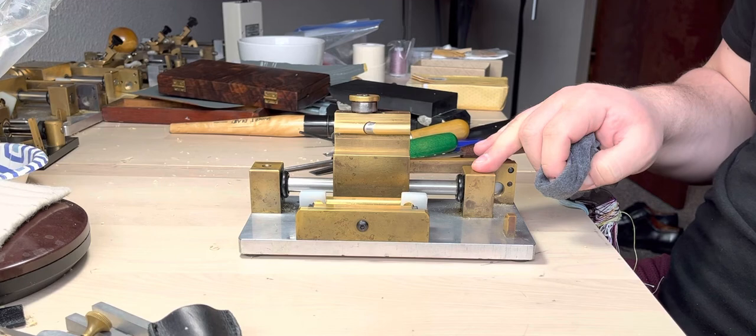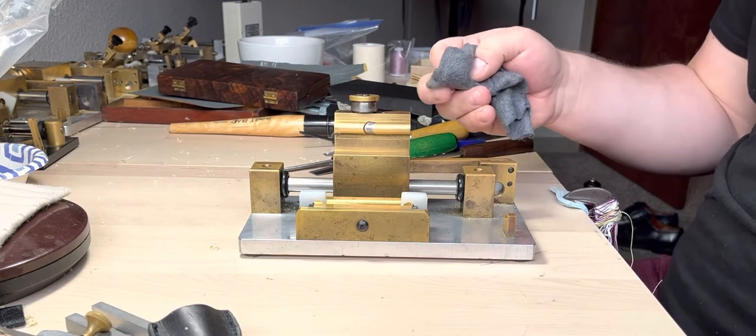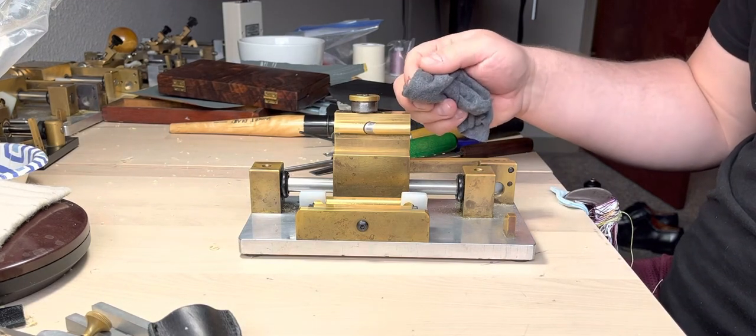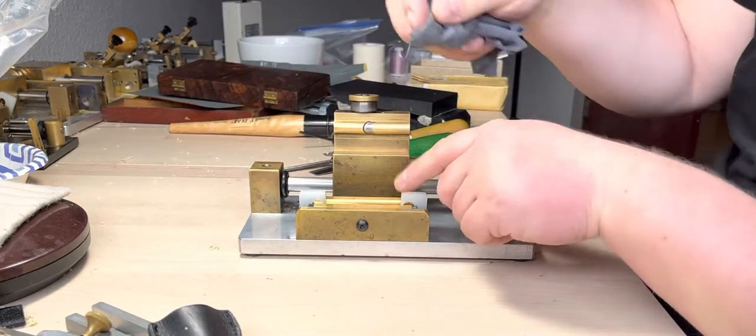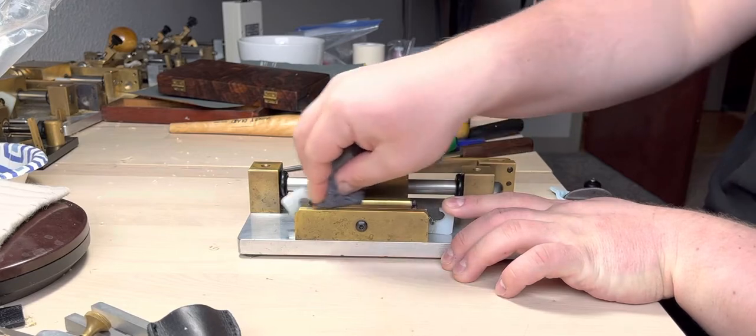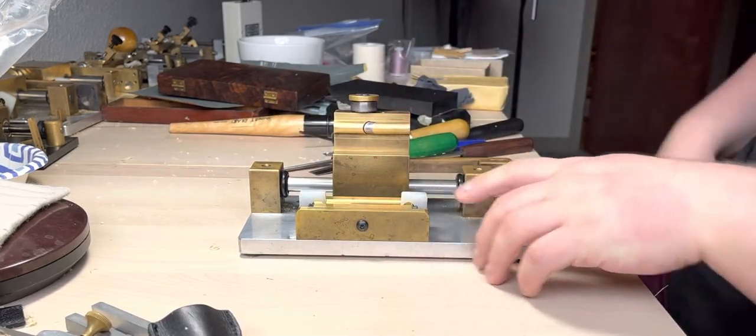The first thing I do when I'm about to gouge cane is, as you saw, take the cotton swab out that has oil on it and then just wipe off the oil from the blade and guide, wipe off the oil from the bed, and we're ready to go.